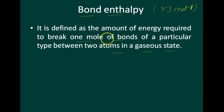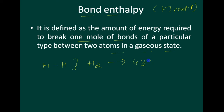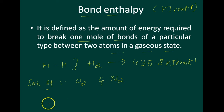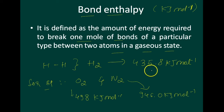For example, the hydrogen-hydrogen bond enthalpy in the H2 molecule is 435.8 kilojoule per mole. For the oxygen molecule O2 this is 498 kilojoule per mole, and for N2 it is 946.0 kilojoule per mole. It is important that larger the bond dissociation enthalpy, stronger will be the bond in the molecule.